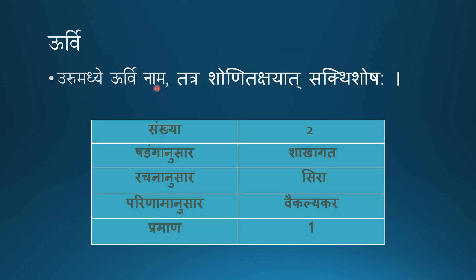Next is Urvi Marma. Uru Madhe — Urvi Nama — Tatra Shonitakshayat Sakti Shoshaha. At the center of the Uru (thigh) there is an Urvi Nama Marma. If any injury occurs there will be Shonitakshaya — severe blood loss — leading to Shosh (emaciation) of the limb. It is two in number on each limb. Shadanganusara it is Shakagata Marma, Raschananusara it is Sira Marma, Parinamanusara it is Vaikalakara causing Vikalatha. There is no harm to the Prana. Pramana is one Angula in length.